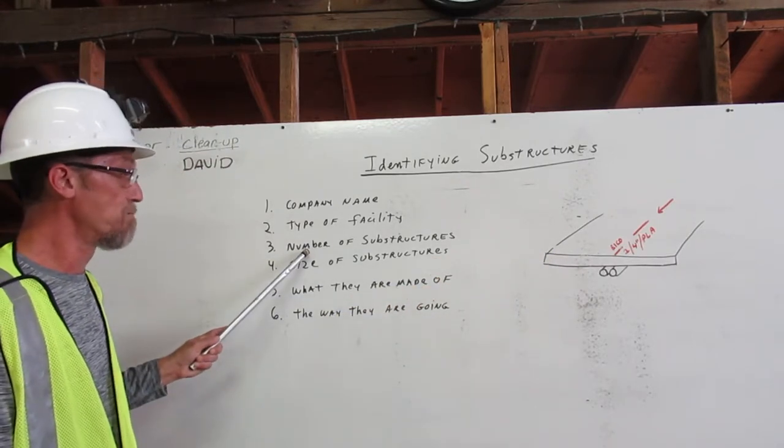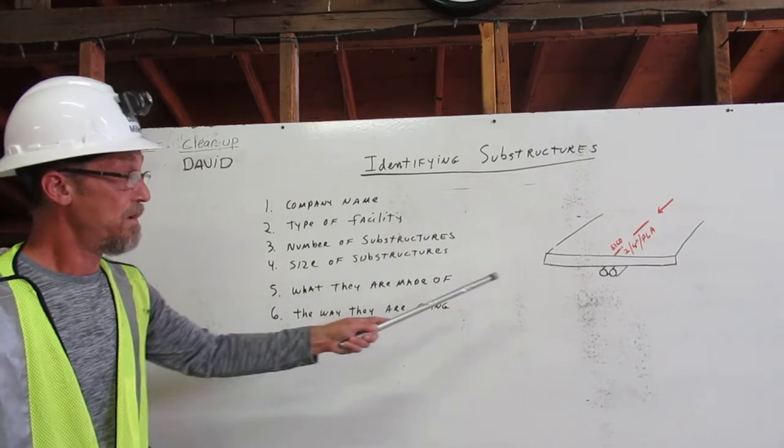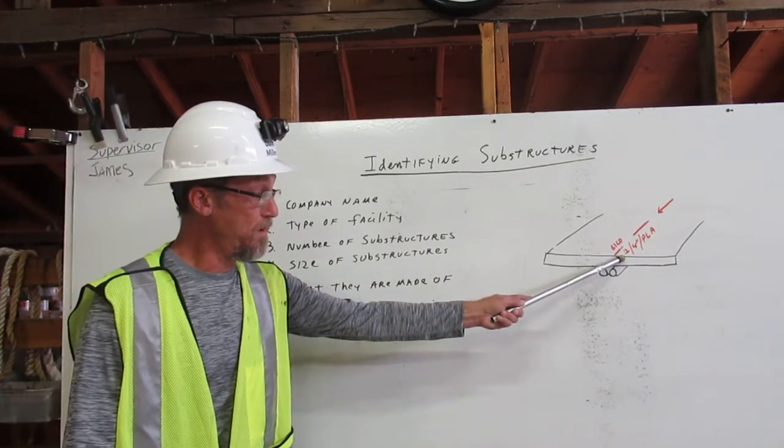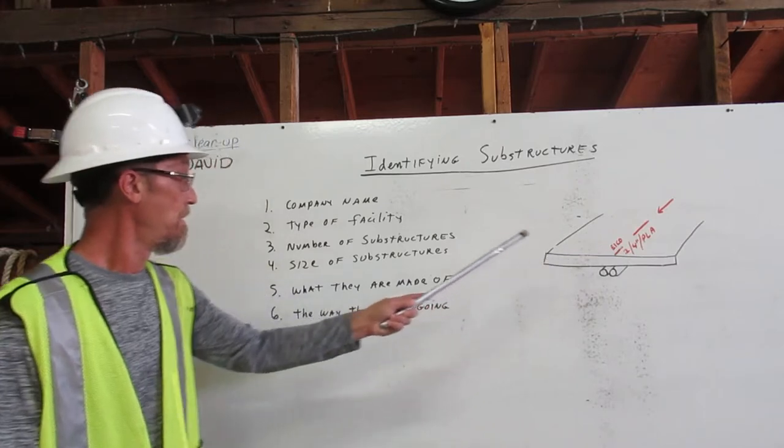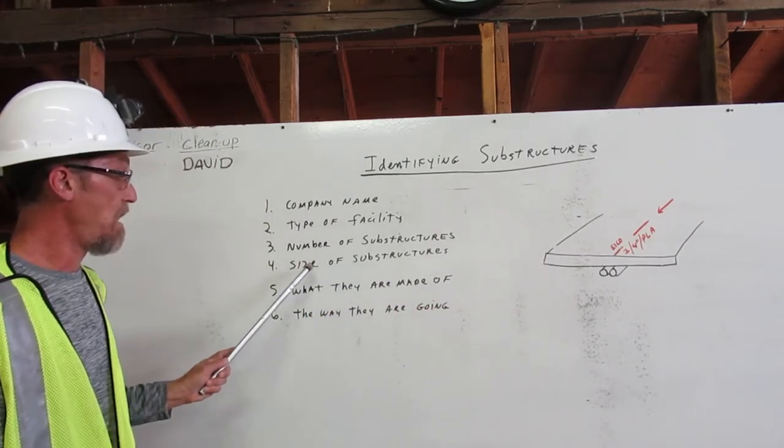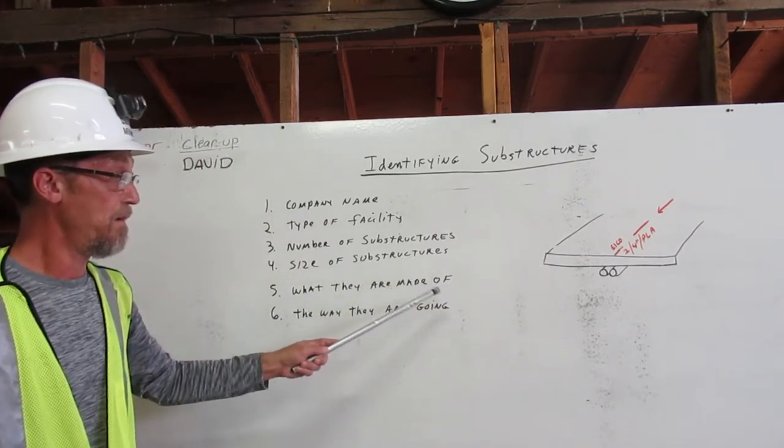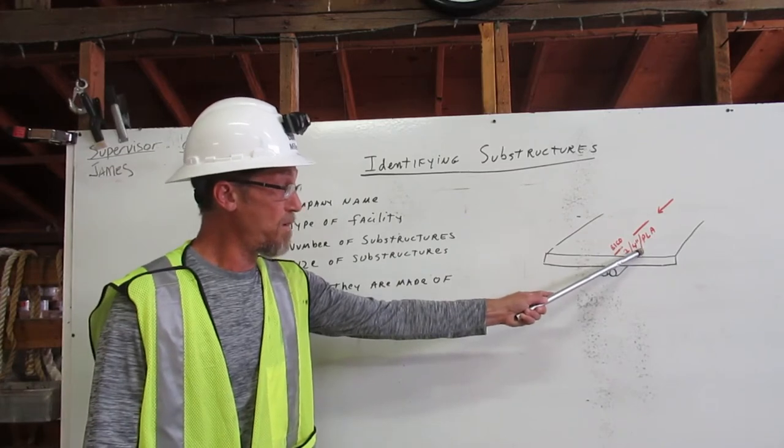These markers also show us number of substructures. Number two shows us two substructures. These markers also show us size of substructures. Four inch in diameter.